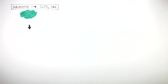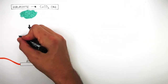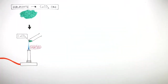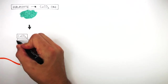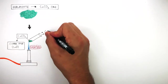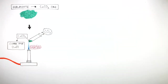To extract the copper from the malachite in a laboratory, we need a Bunsen burner. A boiling tube containing the malachite is placed over the Bunsen burner, where the copper carbonate is heated. The copper carbonate thermally decomposes to form copper oxide (CuO) and carbon dioxide gas, which escapes from the boiling tube.